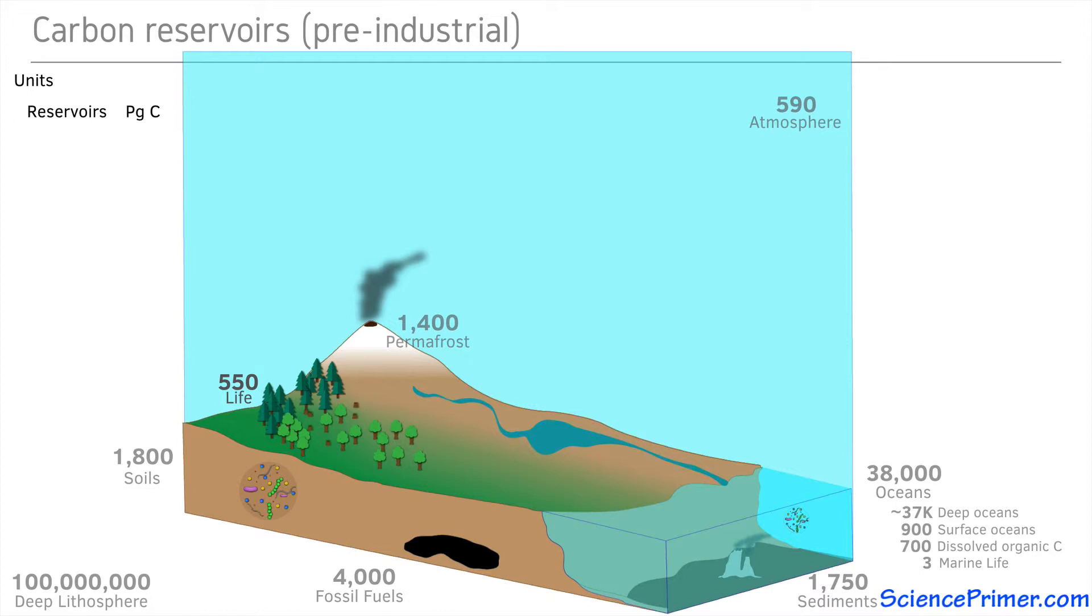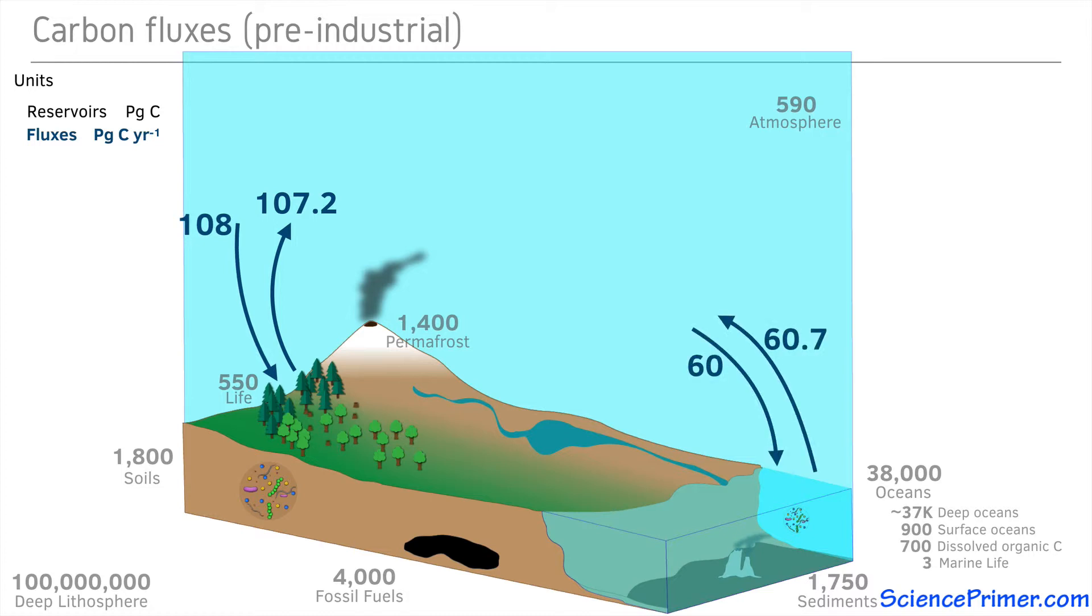Fluxes of carbon between these reservoirs occur at a number of rates and timescales. Prior to the Industrial Revolution, the largest exchange of carbon on an annual basis was the flux from the atmosphere to the terrestrial biosphere through photosynthesis, with about 108 petagrams of carbon per year being fixed by plants. Most of this was quickly returned to the atmosphere by respiration. The next largest flux was gas exchange between the surface ocean and the atmosphere. As with the flux between the atmosphere and the biosphere, this exchange was roughly in balance with only a slight net flux of carbon from the oceans to the atmosphere over time.